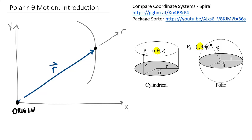All coordinate systems we've dealt with have been orthogonal, meaning both axes are perpendicular to one another. So our theta axis has to exist along a line perpendicular to r. The direction it goes is in the direction of an increasing theta angle. So there is my theta axis — r and theta are always perpendicular.